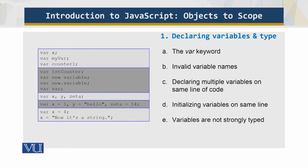Variables are declared in JavaScript with the var keyword. The following are all valid variable declarations - these are all valid ones.